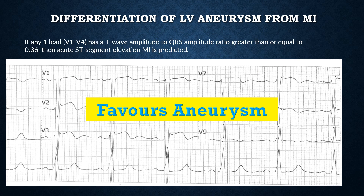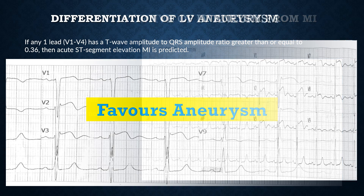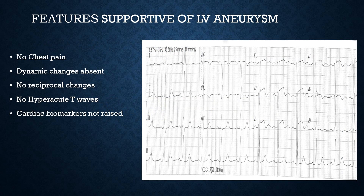Since both rules are not in favor of myocardial infarction and are more supportive of myocardial aneurysm formation, additional clinical features also supported LV aneurysm: absence of chest pain, no dynamicity in serial ECGs, no reciprocal changes, T waves were not hyperacute as expected with ischemia or infarction, and the cardiac biomarkers were not raised.